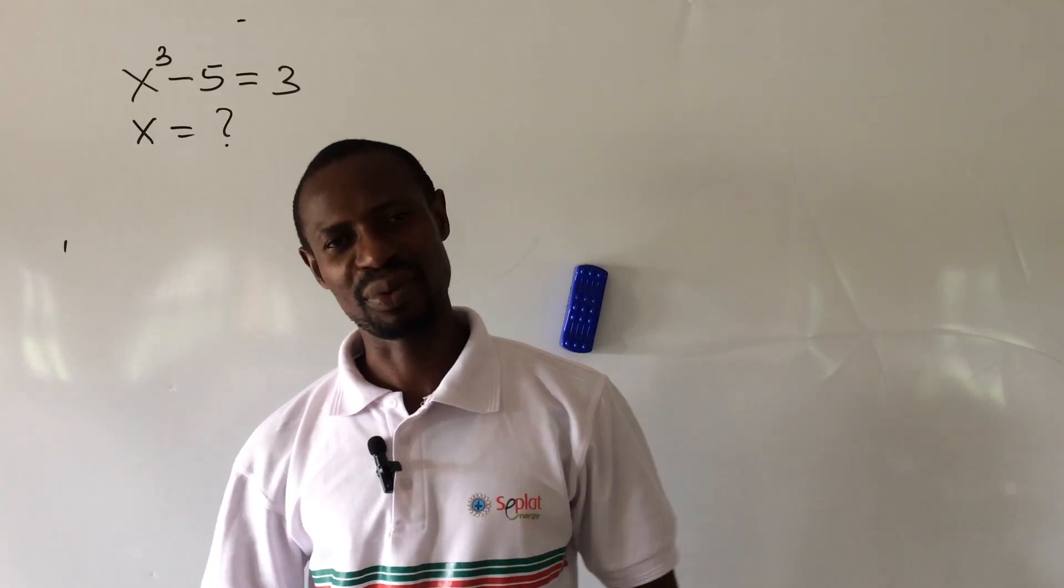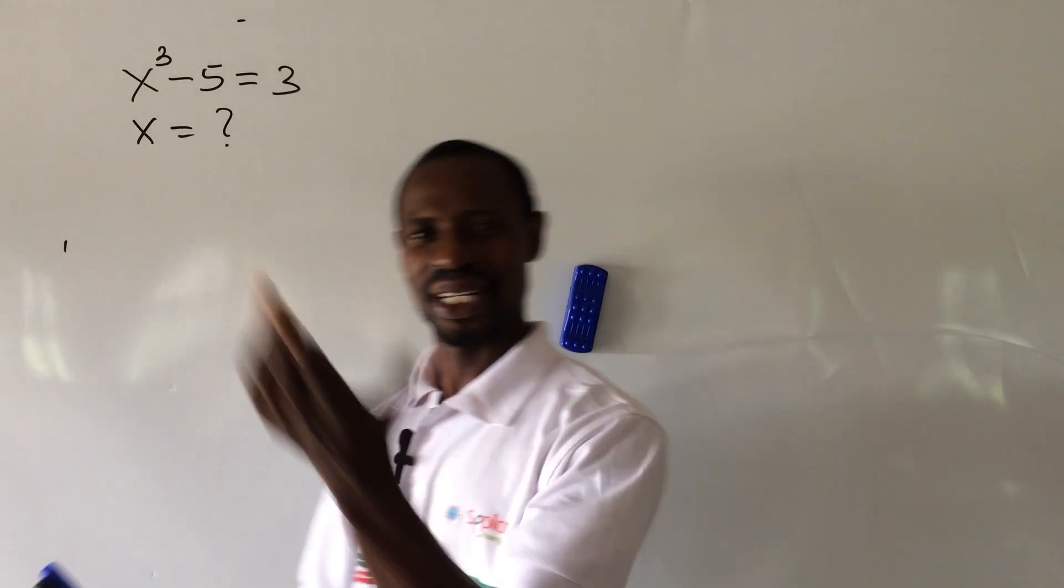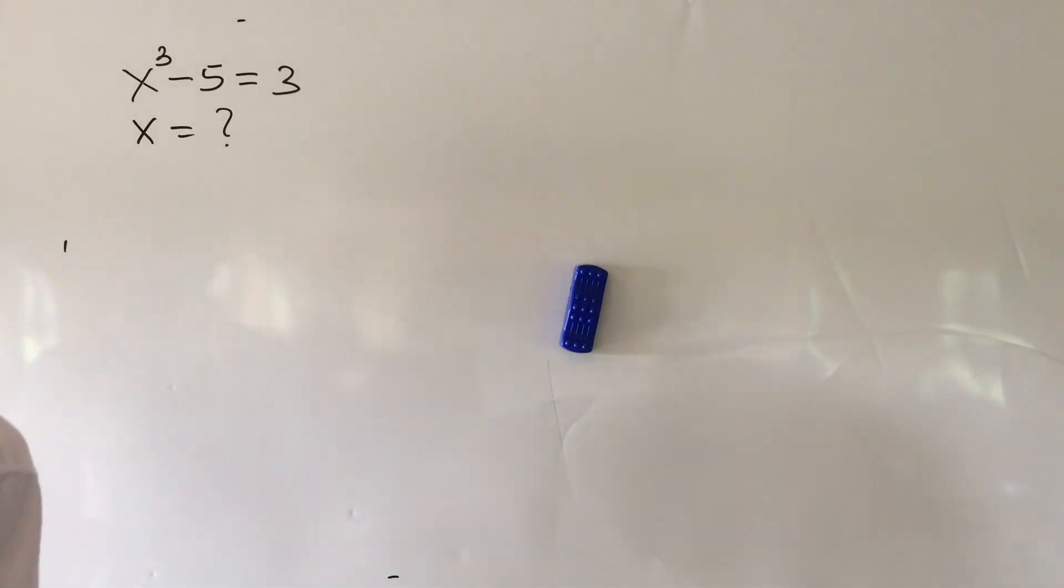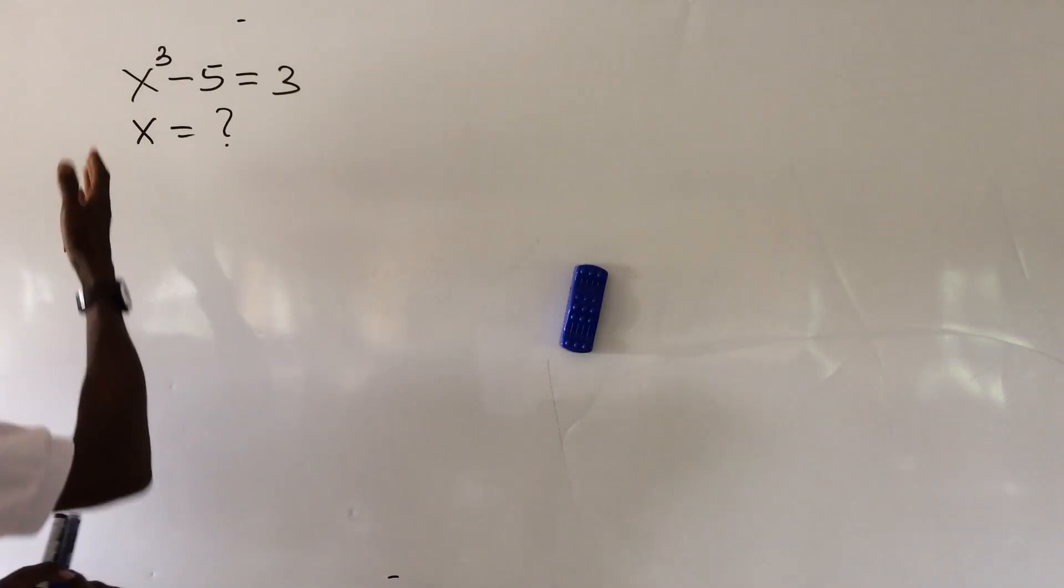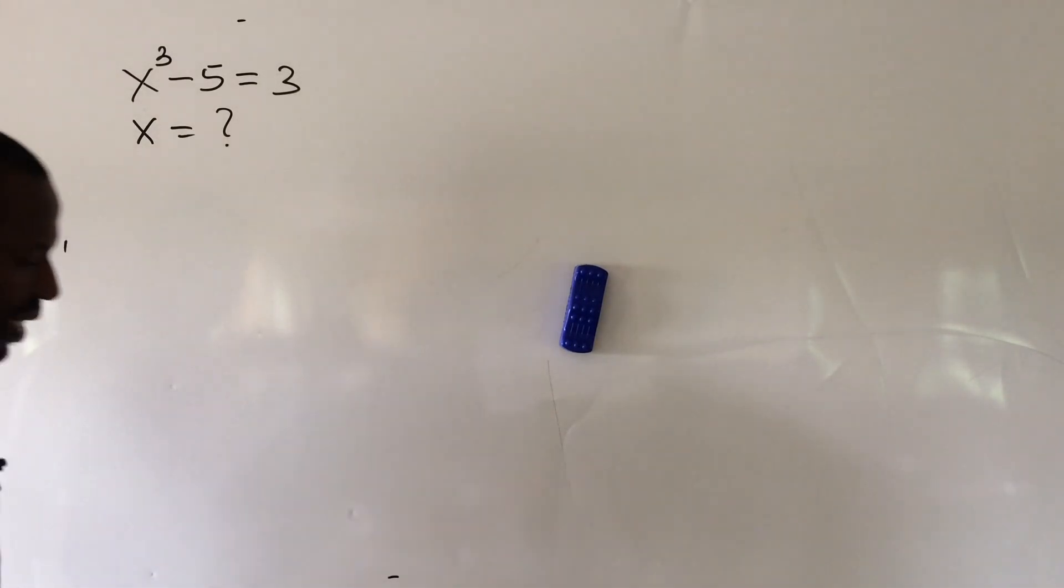So let's go into today's challenge. The question says x to the power of 3 minus 5 equal to 3. Then what will now be the value of x? Let's take our solution.